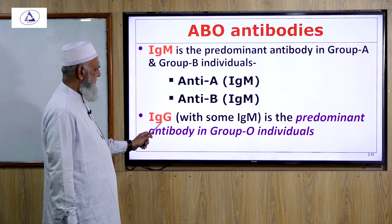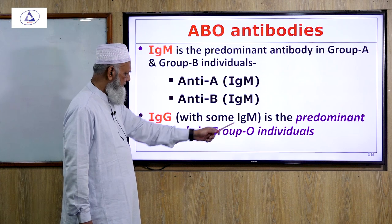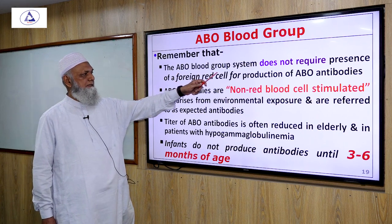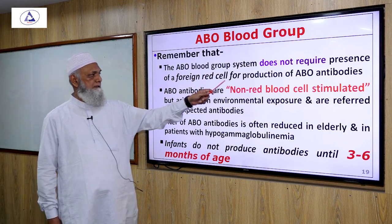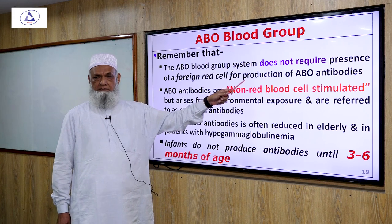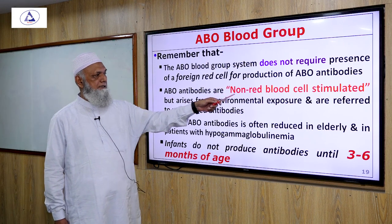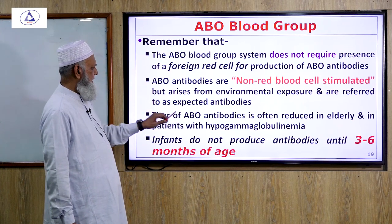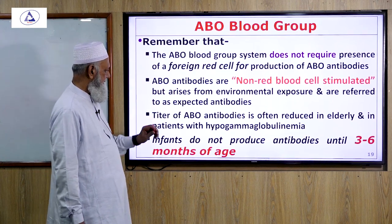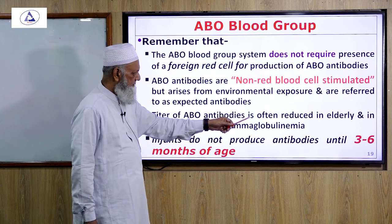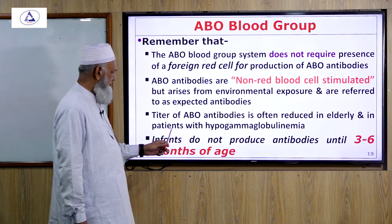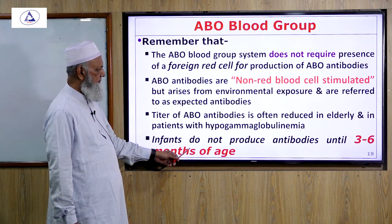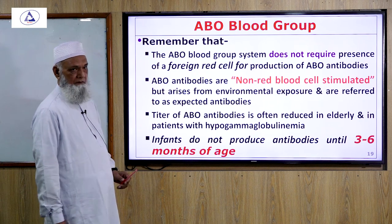IgG with some IgM is the predominant antibody in group O individuals. Remember that the ABO blood group system does not require the presence of a foreign red cell for production of ABO antibodies. ABO antibodies are non-red cell stimulated but arise from environmental exposure and are referred to as expected antibodies. The titer of ABO antibodies is often reduced in the elderly and in patients with hypogammaglobulinemia. Infants do not produce antibodies until 3 to 6 months of age.